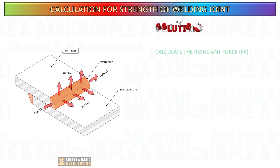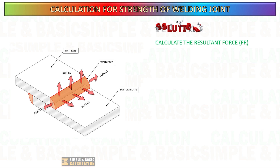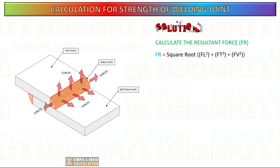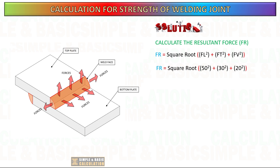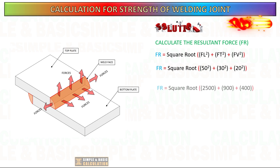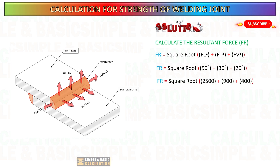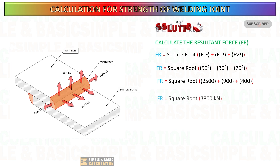Determine the resultant force. Calculate the resultant force from the three components — longitudinal, transverse, and vertical forces — by taking the square root of the sum of their squares. Follow the formula as shown.